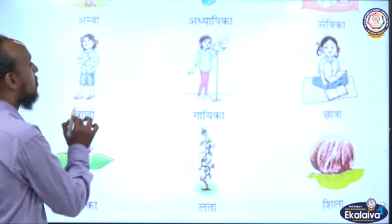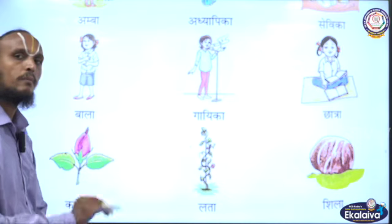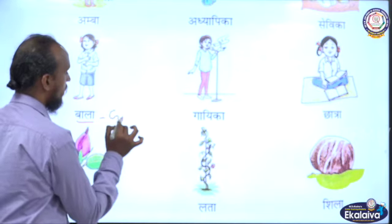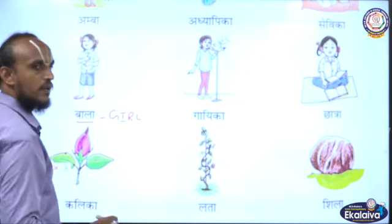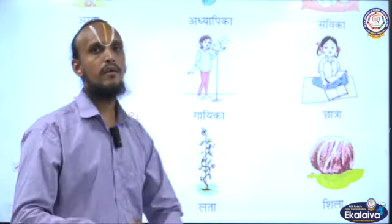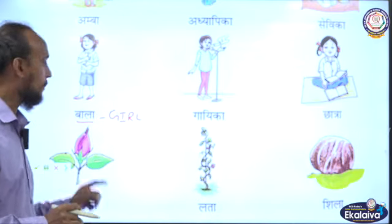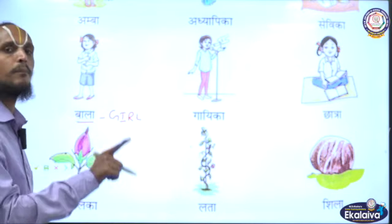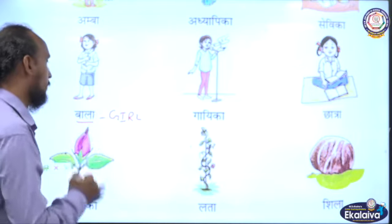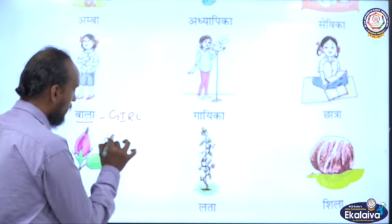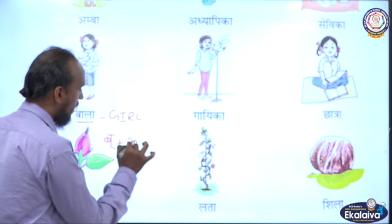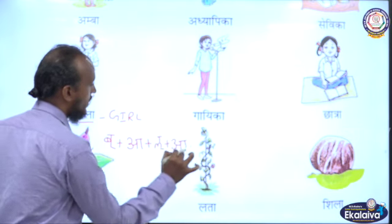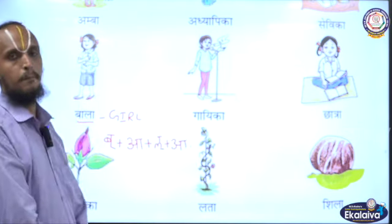Next: Bala. What does Bala mean? Bala means Girl. You say, children — how can we split this word? See the picture, see the word, and you say: Ba + lā is equal to Bala.